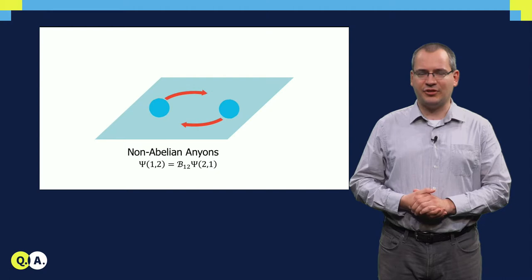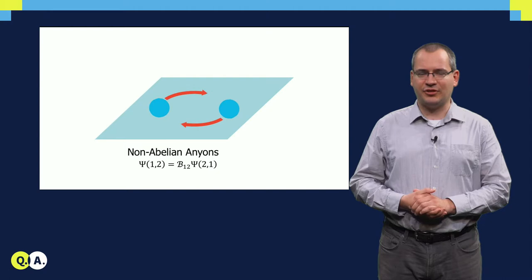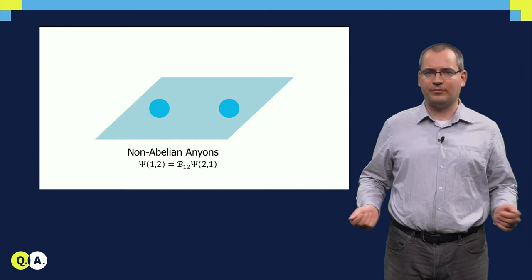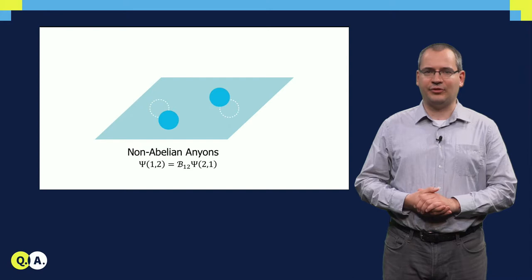More generally, the exchange operation may be a non-trivial unitary operation, which brings the system to a new quantum mechanical state after each exchange. As these operations generally don't commute, we call the associated anyons non-abelian.